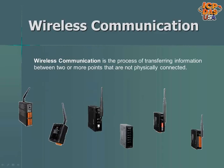Wireless communication is the process of transferring information between two or more points that are not physically connected. Wireless networks help with a clean installation for applications where physical cables are inconvenient, like in factories, buildings, and remote monitoring applications. They also help with mobile applications where wires would be inconvenient when attached to moving objects like vehicles.